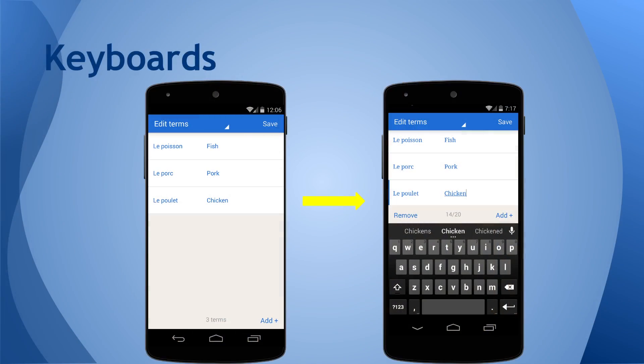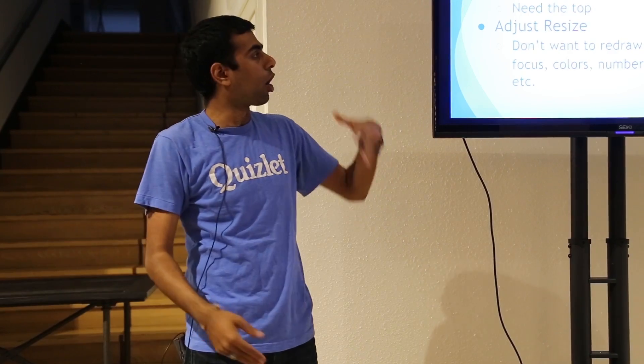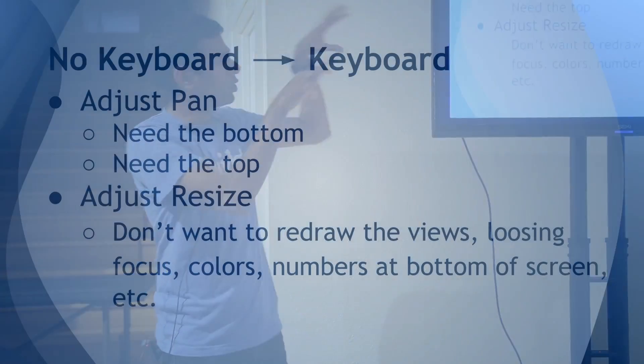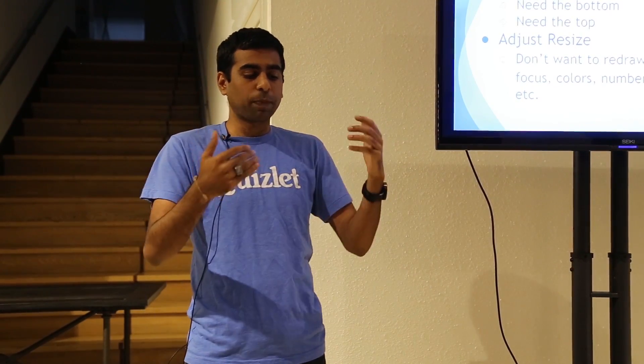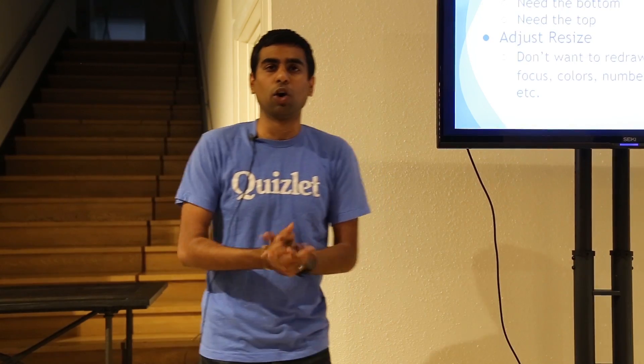Next topic: keyboards. We start with a screen, you click an EditText, you want the keyboard to pop up. For Android developers, you know the two main things you use are adjustPan or adjustResize, which you can set in your manifest. We initially didn't want to use adjustResize because it will actually redraw the views — what happens when you redraw the views? You lose focus, maybe colors you set, and we have numbers at the bottom of the screen that would get all off. So we said let's go with adjustPan. But with adjustPan, the keyboard covers the bottom row, and if you click an EditText at the bottom, the top of the screen pushes off. So that's clearly not viable since we need both the top and the bottom.